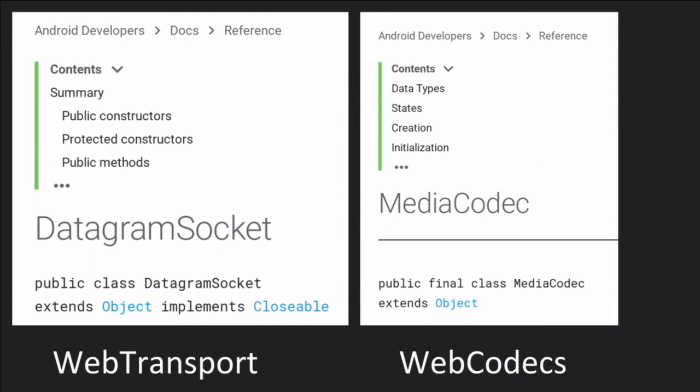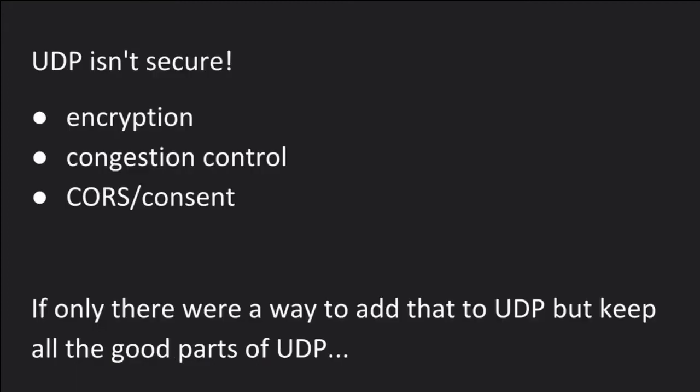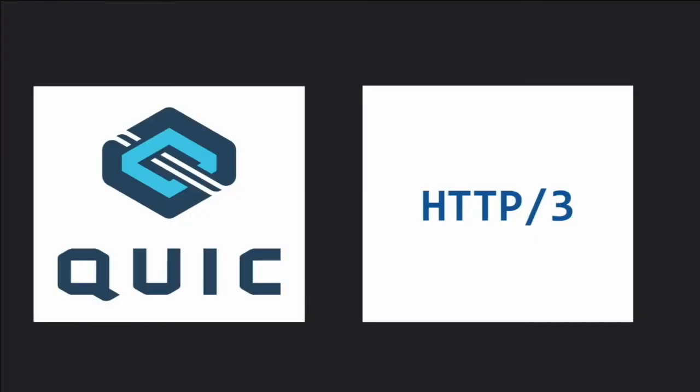For transport, it is a little more tricky because UDP isn't secure. We need to add encryption, congestion control, and CORS or consent. The answer is QUIC, or HTTP/3.